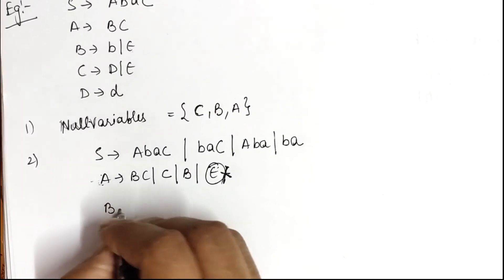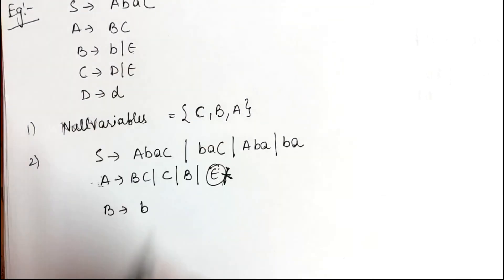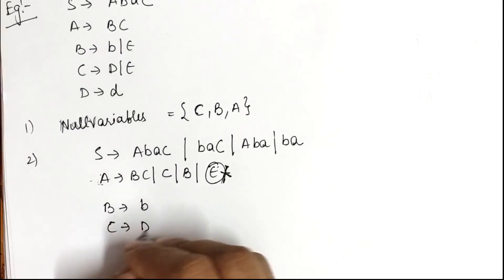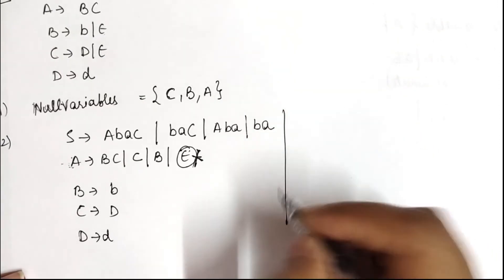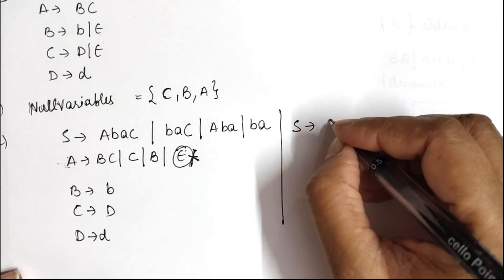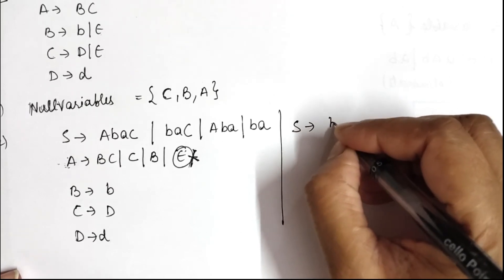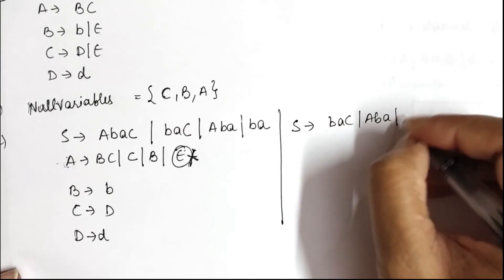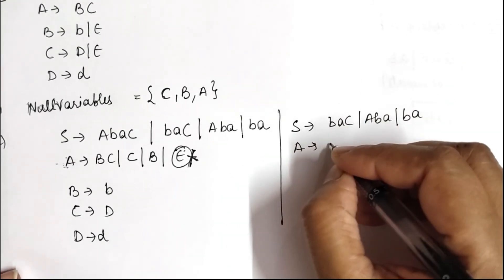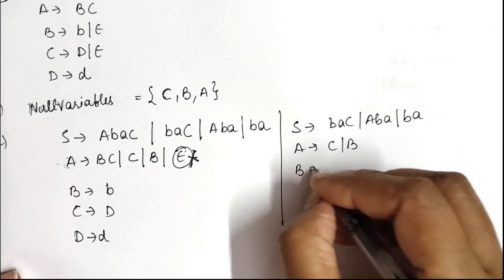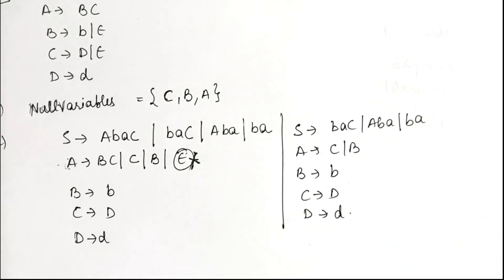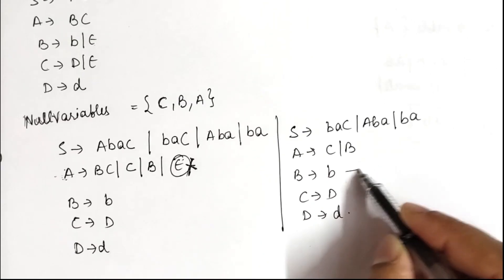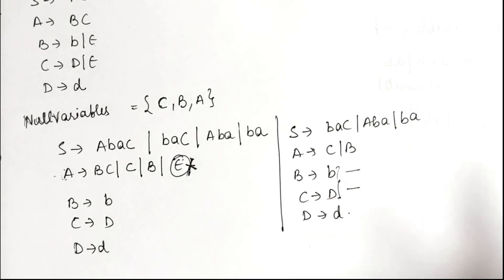The next production B derives B is kept. C derives D and D derives D are also kept. After eliminating all nullable variables, the grammar becomes: S derives B A C or A B A or B A, A derives C or B, B derives B, C derives D, D derives D. We observe that after removing null productions, we have added some unit productions such as A derives C or B. These are also useless and need to be eliminated.